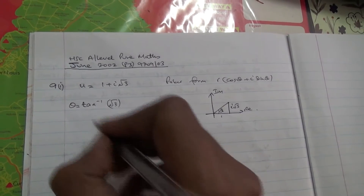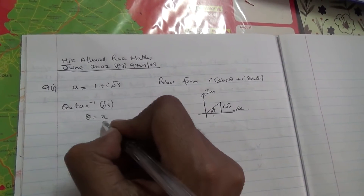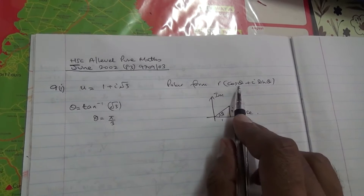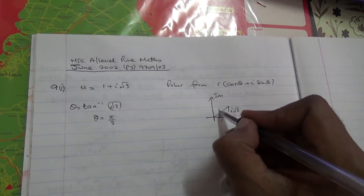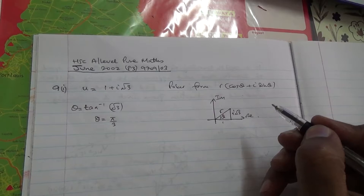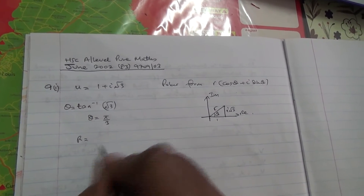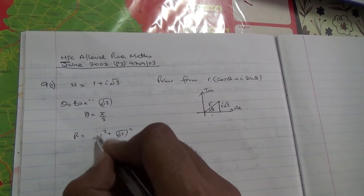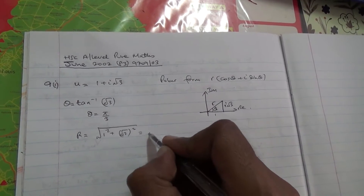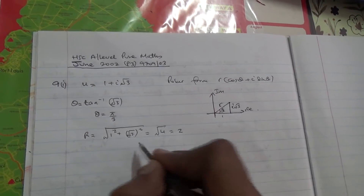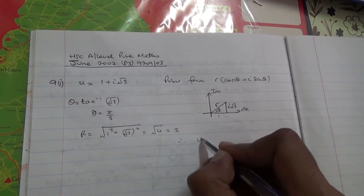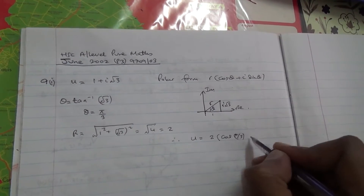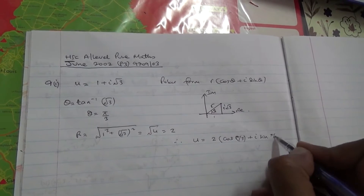tan inverse of root 3 gives us θ equal to π over 3. So this is the argument. Then we need to find r. Using Pythagoras' theorem, r equals the square root of 1 squared plus root 3 squared, which gives the square root of 4, and that is 2. Therefore, u equals 2 times cos(π/3) plus i sin(π/3).